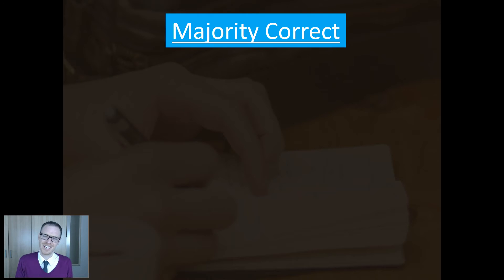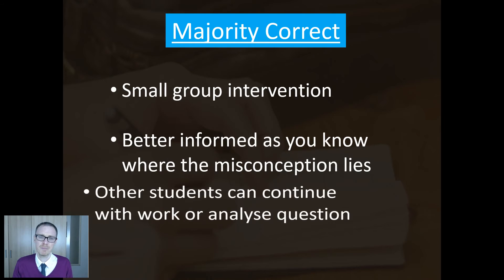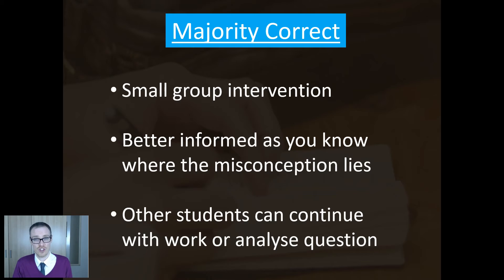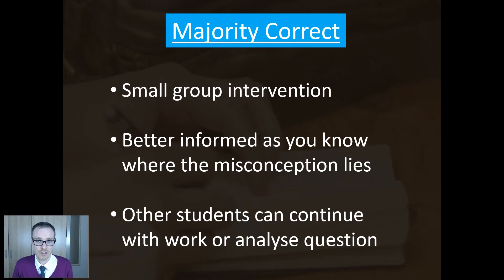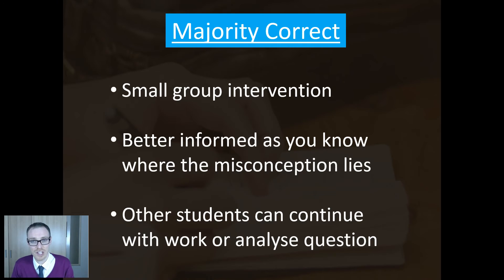The next scenario: what do you do if the vast majority of your kids get it right but you've got a few who get it wrong? I'd do a bit of small group intervention — get those four or five kids who've got it wrong together, maybe at the front of the class. I'm going into that teaching much better informed because I've seen what answer they've given, and the whole point of diagnostic questions is I've learned something from the wrong answer. So say it's on y equals mx plus c — it's not just that they don't understand straight line graphs, I know their specific misconception. The rest of the class can continue with set work, analyze the diagnostic question, write their own diagnostic question, or you can bring one of them in to help with the small group intervention.